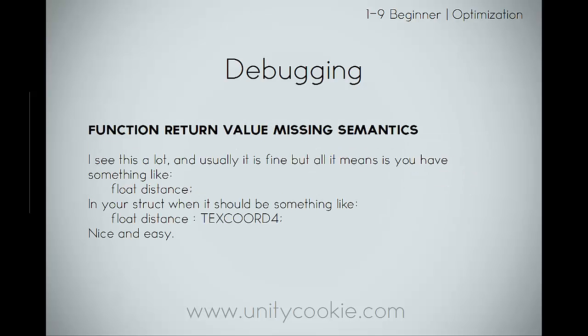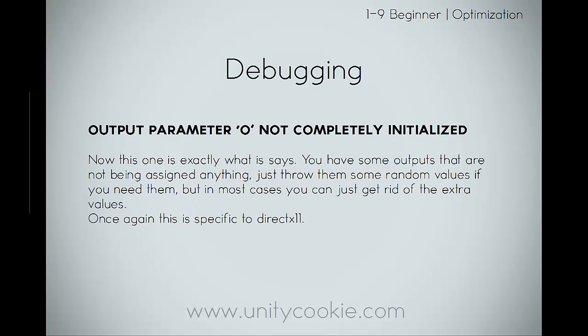'Function return value missing semantics.' I see this one a lot. Usually it is fine, but all it means is you have something like float distance in your struct when it should have something like float distance with a TEXCOORD semantic. That's nice and easy. 'Output parameter O not completely initialized.' This one is exactly what it says - you have some outputs that are not being assigned to anything. Just assign them some random variables if you need them, but in most cases you can just get rid of the extra values. This is specific to DirectX 11.